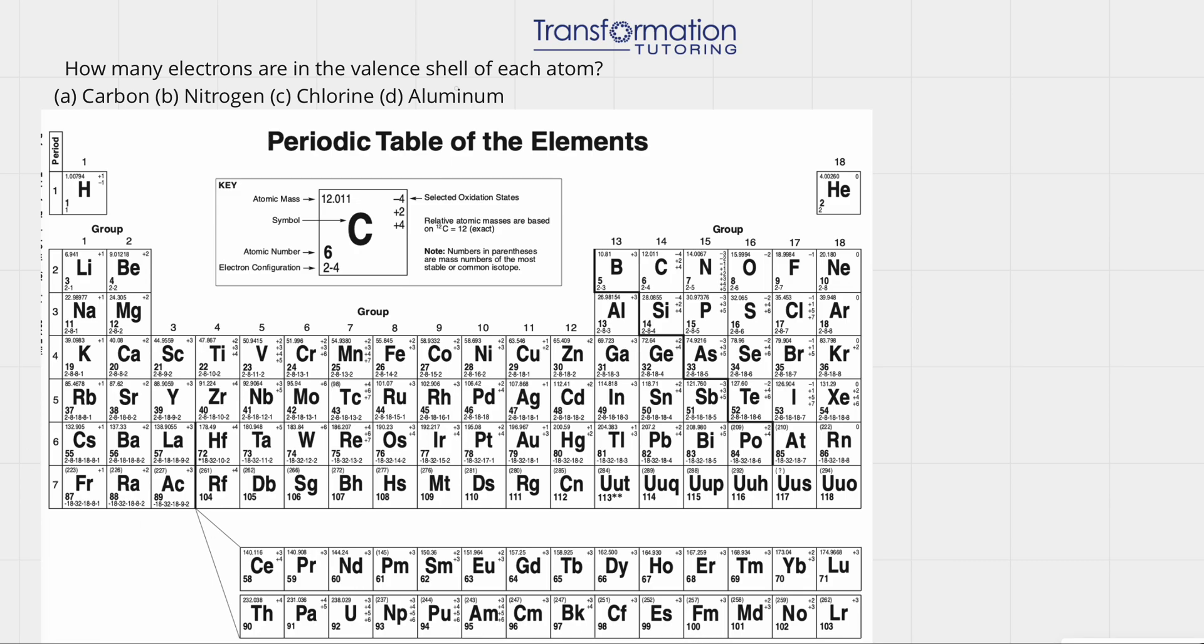In order to do this problem, we will use a periodic table. On the periodic table, we will look at the group numbers, which basically tell us the number of electrons in the valence shell, called valence electrons.